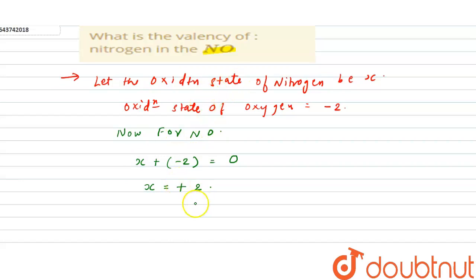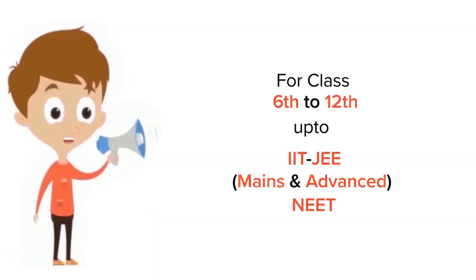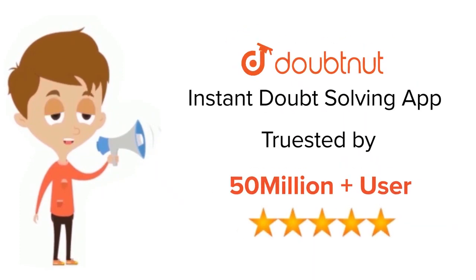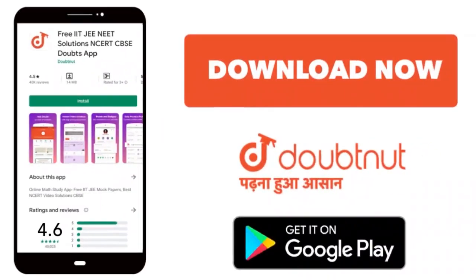of nitrogen in NO is plus two. This is our correct answer for the given question. For class 6 to 12, IIT-JEE and NEET level, trusted by more than 5 crore students. Download Doubtnet app today.